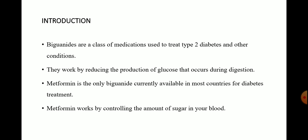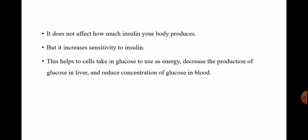They work by reducing the production of glucose that occurs during digestion. Metformin is the only biguanide currently available in most countries for diabetes treatment. Metformin works by controlling the amount of sugar in your blood. It does not affect how much insulin your body produces, but it increases the sensitivity to insulin. Metformin helps cells take in glucose to use as energy and decreases the production of glucose in the liver, reducing concentration of glucose in blood.